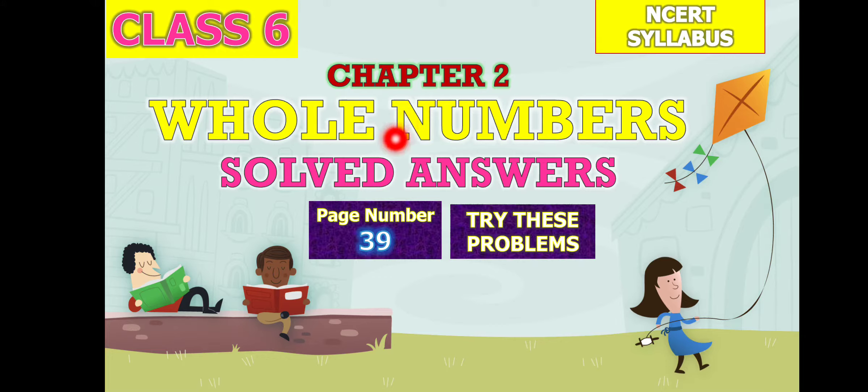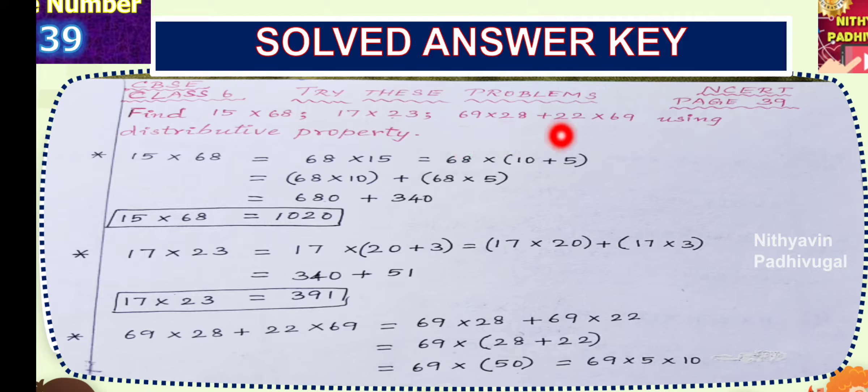The first problem is find 15 times 68, 17 times 23, 69 times 28 plus 22 times 69 using distributive property. So, there is a condition to solve these problems. What is the condition? We have to apply distributive property.